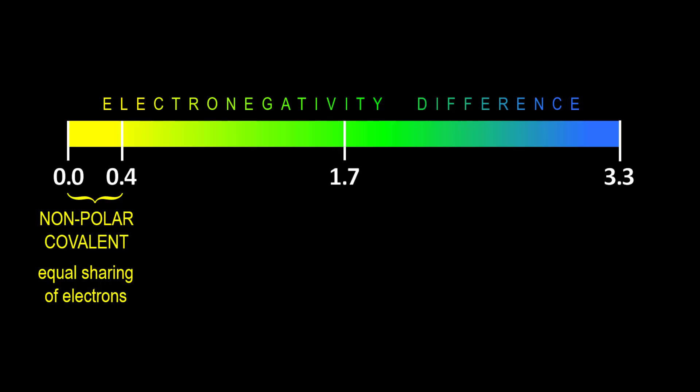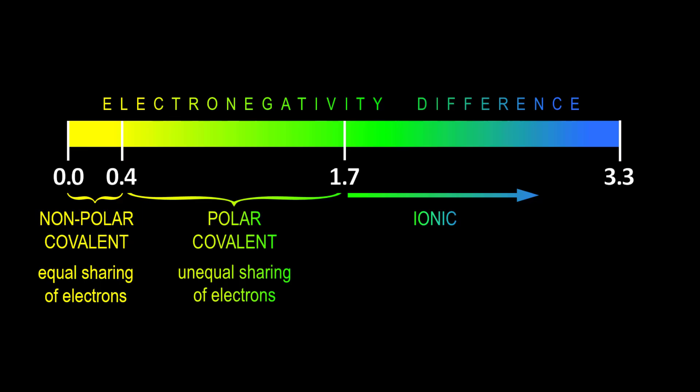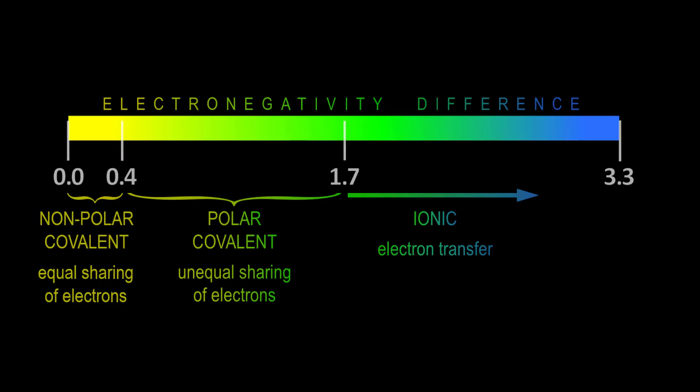From 0.4 to 1.7 is considered polar covalent, meaning an unequal sharing. And greater than 1.7 is considered ionic, meaning a transfer of electrons. These divisions are somewhat arbitrary, and this will be considered in more detail toward the end of the video.